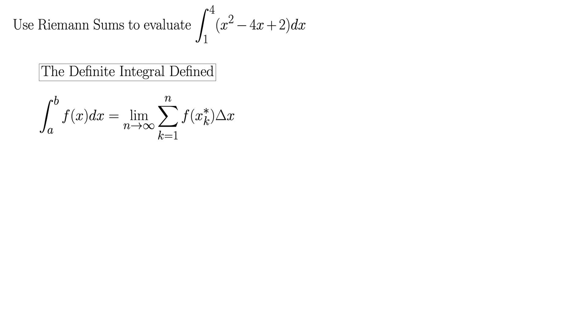We start with the limit definition of the definite integral, which tells us that the integral is equal to the limit as n goes to infinity of the sum from k equals 1 to n of f of xk star delta x. We are essentially letting a bunch of rectangles become infinitely thin. That gives us the exact area under this curve.